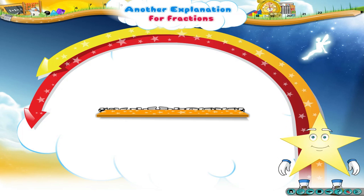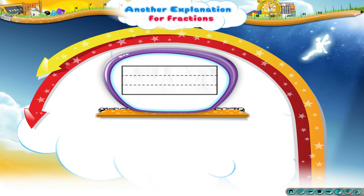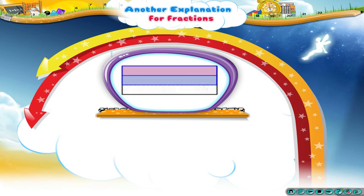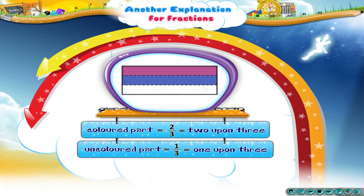Now Starry, look at these paper strips. Each figure is divided into 3 equal parts. Each two such parts is 2 upon 3. So the coloured part is 2 upon 3 and the uncoloured part is 1 upon 3.